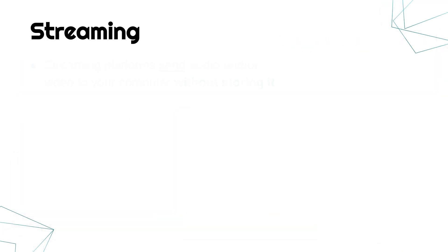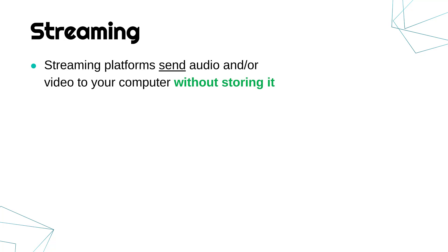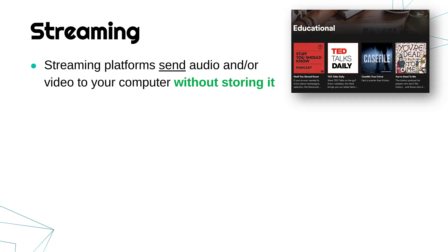Streaming platforms are obviously massive nowadays — things like YouTube, Spotify, Netflix, Disney Plus and so on. Streaming platforms work by sending audio and/or video to your computer without storing it. So if you're watching Netflix, it's sending your computer the video and audio but it's not getting stored — it's just shown to you straight away and then forgotten about. This means you can watch or listen immediately without downloading the entire file first. It does mean often you can't download it for later, and many platforms don't allow that unless you pay more.